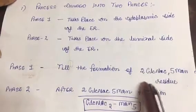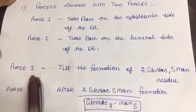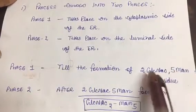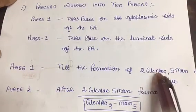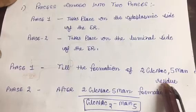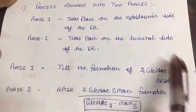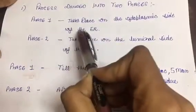But the moment these five mannose and two N-acetylglucosamine residues are attached, phase one is completed, and it is taking place on the cytoplasmic side of the endoplasmic reticulum.